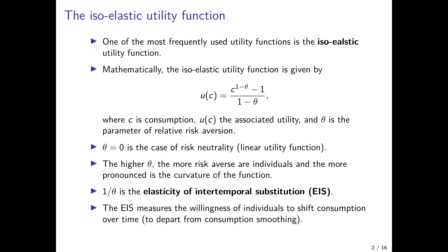1 over theta — the inverse of the coefficient of relative risk aversion — is the elasticity of intertemporal substitution, which measures the willingness of individuals to shift consumption over time, or to depart from consumption smoothing. In the case of the iso-elastic utility function, risk-aversion and consumption smoothing are linked — one is the inverse of the other. Individuals who are more risk-averse are less willing to depart from consumption smoothing.